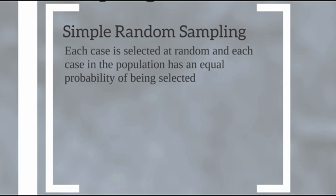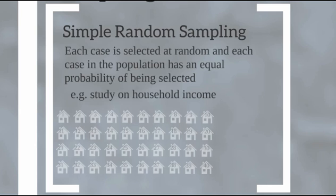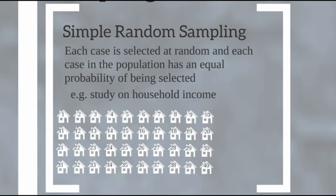Simple random sampling is such that each case is selected completely at random, and each case in the population has an equal probability of being selected. For example, say we want to do a study on household income and we have 40 different households. We randomly sample each of these 40 households so that the sample represents the full population characteristic of household income — the central tendency should be the same and variability relatively similar.